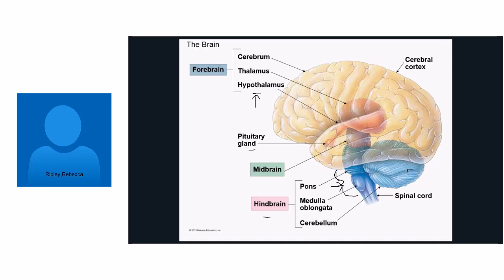The cerebellum coordinates body movement — an injury at the back of the head could make it very difficult to keep balance. The cerebral cortex is the outer layer of the cerebrum — the main squiggly part of the brain — and it has very important functions: learning, speech, emotions, behavior, and complex behavior like art. That outer layer is responsible for all of that. Knowing those basics of the brain is important.